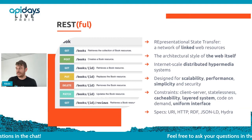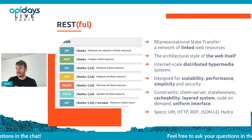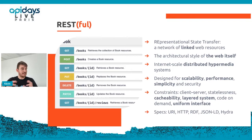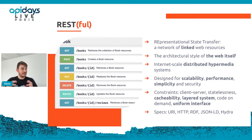The last interesting constraint in the REST architecture — very useful for what I'll talk about — is the uniform interface. Using only links included in the resources you fetch from the server, you will be able to browse the graph of data and retrieve all the data that you need. A true REST API should be usable by any client without having something hard-coded about that API in the client.